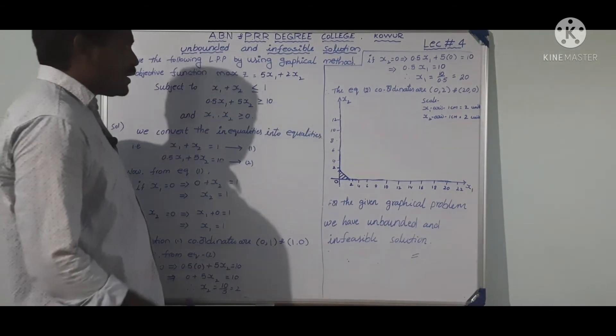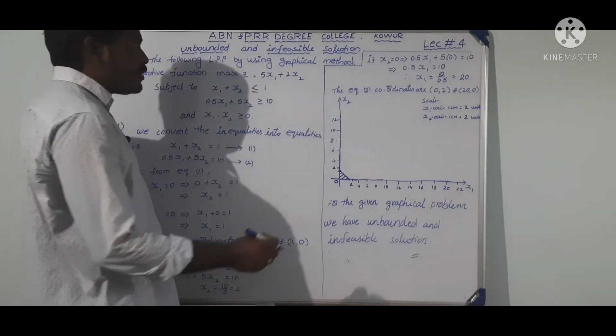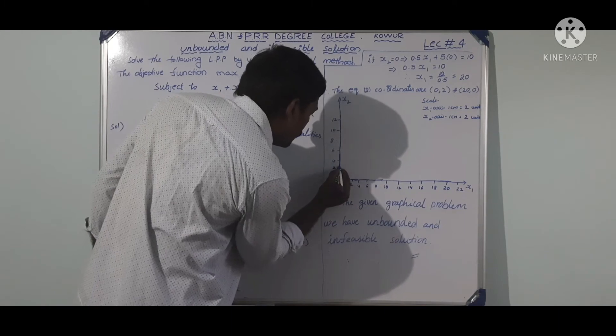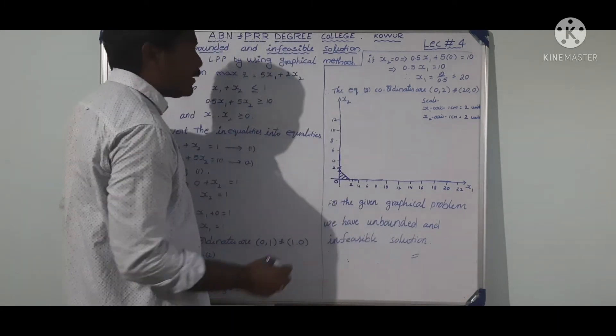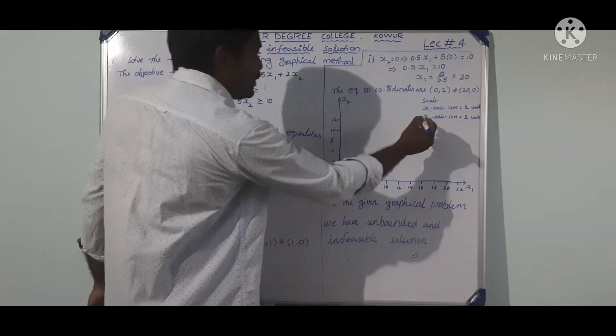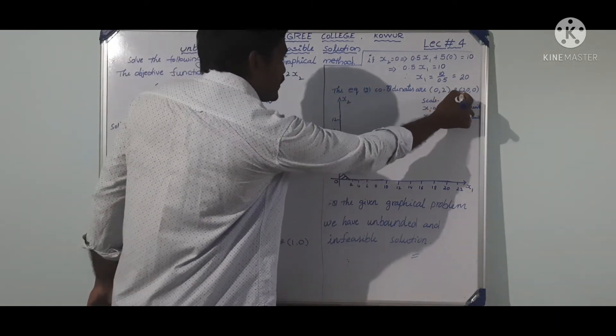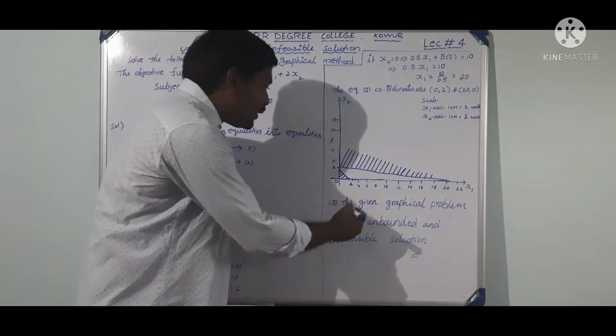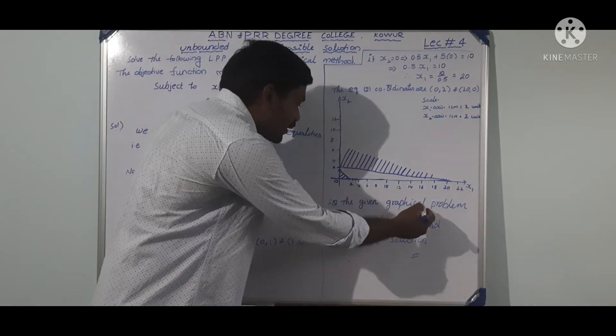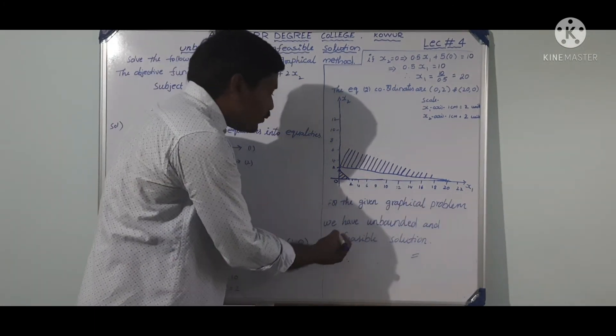Welcome to ABN PRR Online Process. In our last class, I was discussing the Graphical Method. Today I am discussing the same graphical method but with another model: unbounded and infeasible solutions.